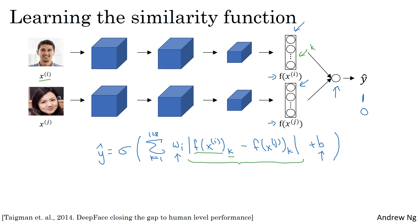There are a few other variations on how you can compute this formula. For example, another formula could be f of x i k minus f of x j k squared divided by f of x i plus f of x j k. This is sometimes called the chi-squared formula, or chi-squared similarity. This and other variations are explored in the DeepFace paper which I had referenced earlier.